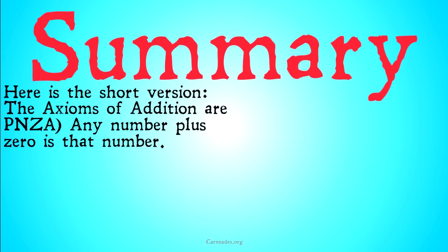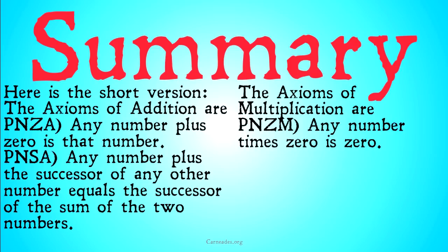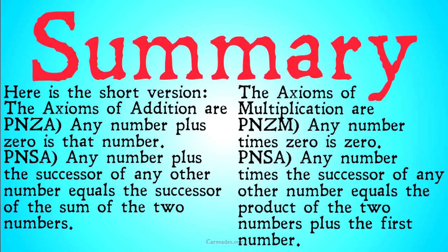We also have axioms of addition and multiplication. The axioms of addition, once again thinking recursively, cover the first element of our series and how we get from one to another. The first one is: any number plus 0 is that number — a pretty intuitive rule about addition. The second one, a little bit more complicated: any number plus the successor of any other number equals the successor of the sum of those two numbers. The axioms of multiplication are very similar: any number times 0 is 0, and any number times the successor of any other number equals the product of the two numbers plus the first number.